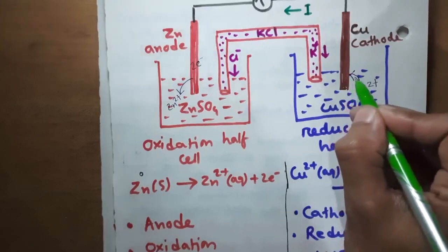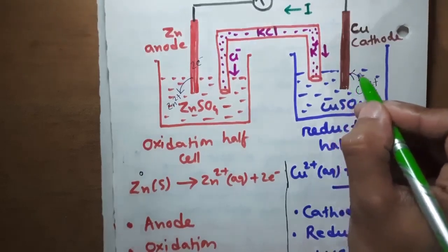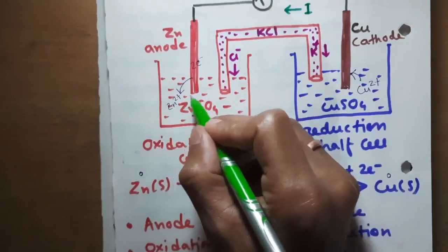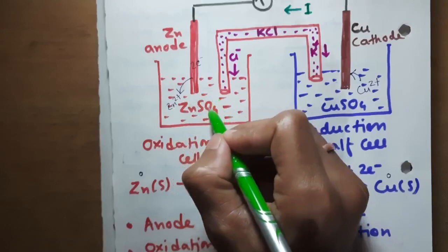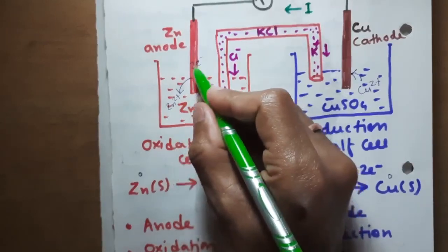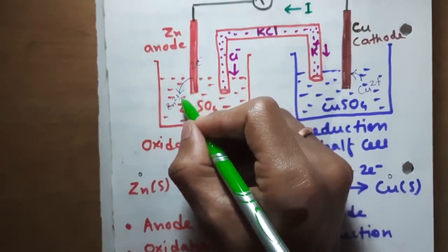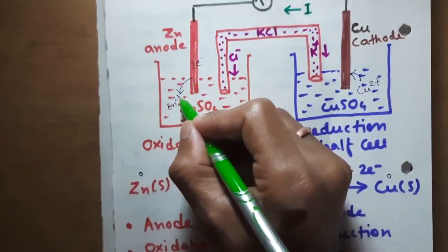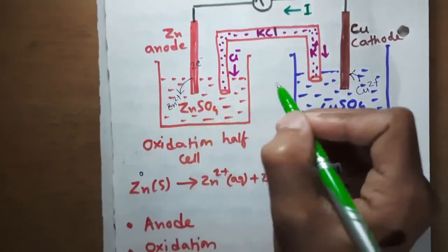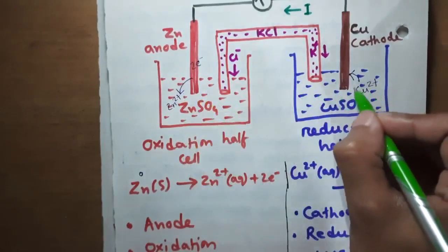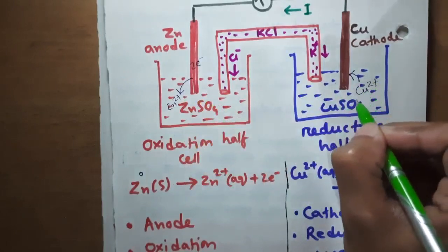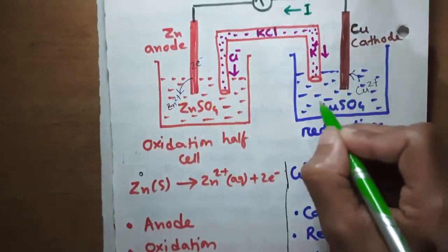At the same time, as the reaction proceeds, the concentration of zinc 2 plus ions will increase in the zinc solution because zinc metal is dissolving, and the concentration of copper 2 plus ions will decrease in the copper solution because copper 2 plus ions are being deposited as solid copper.